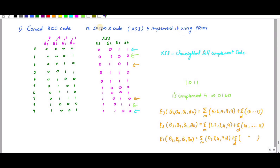BCD is a 4-bit code and it ranges from 0 to 9.